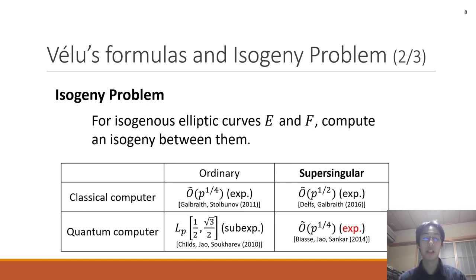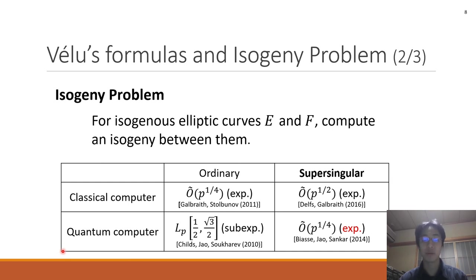On the other hand, there is one problem. For isogenies, given the curves E and F, compute an isogeny between them. This problem is called the isogeny problem, and it is considered hard to solve. This table shows the computational complexity for solving isogeny problems. As shown in this table, even using quantum computers, it is hard to solve the isogeny problem.